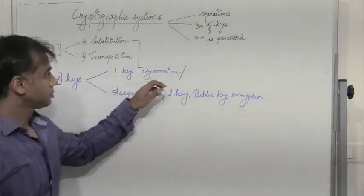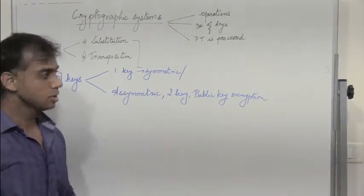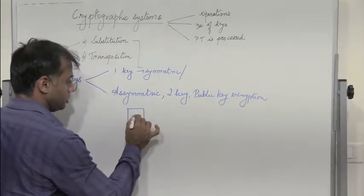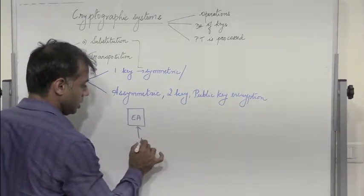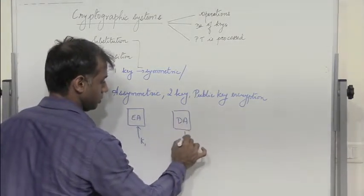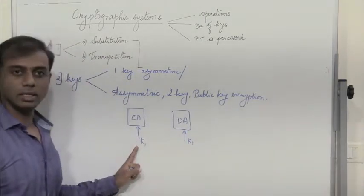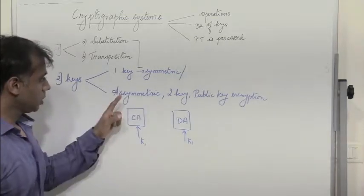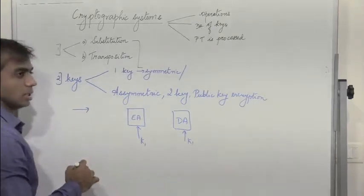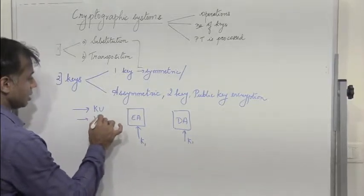We have already seen symmetric and asymmetric ciphers in previous lectures. In case of a symmetric cipher, briefly, the encryption algorithm uses a key K1 and the same key is used by the decryption algorithm. It is one single key used both for encryption and decryption. In the case of asymmetric or public key encryption, there are two keys — one is referred to as the public key and the other as the private key.